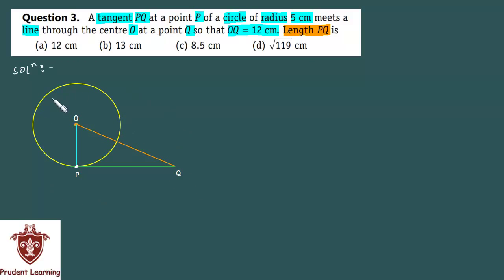To save time I've drawn it beforehand, but in the exam you must draw it yourself. Let's understand the question properly. You have a tangent PQ which intersects the circle at point P. This point P is common to both the circle and tangent, and we call this the point of contact.